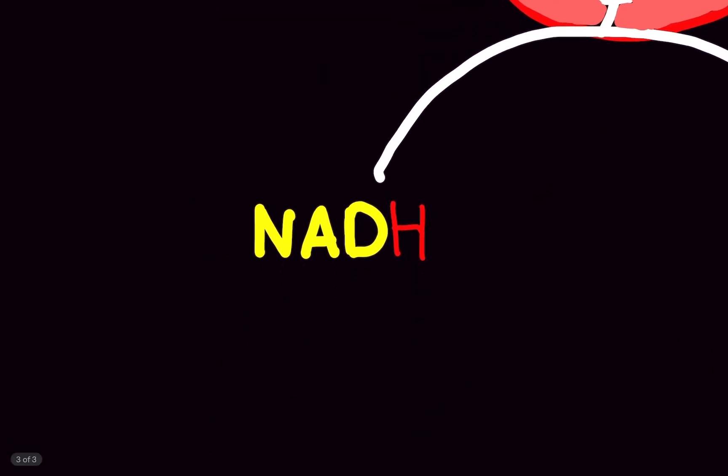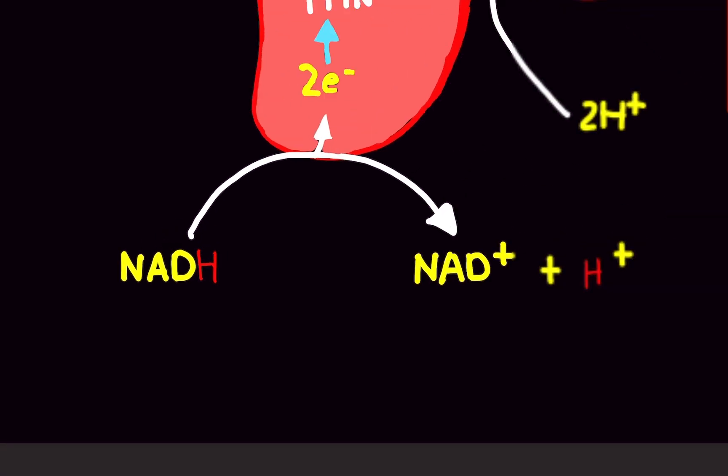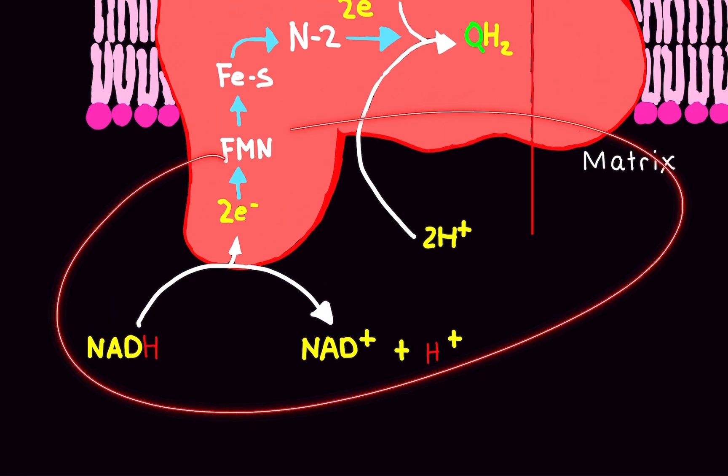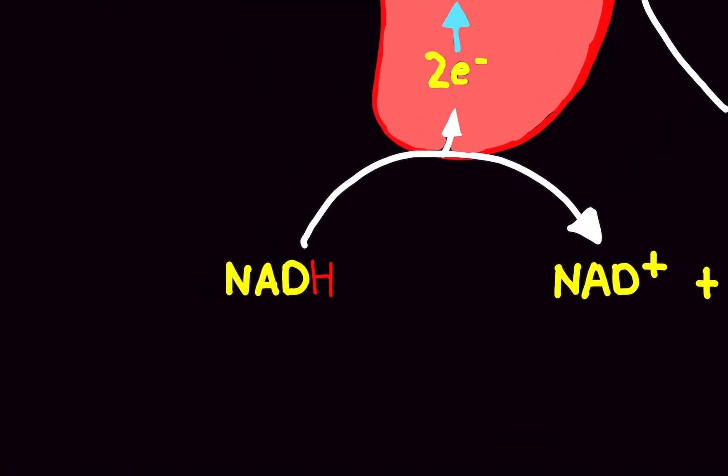We're going to start with NADH. Now notice, the first thing to notice is this is not NADH plus H. This is normal NADH. This is coming from glycolysis and the Krebs cycle. Now remember, glycolysis happens in the cytosol. We need to use the malate aspartate shuttle to get the NADH into the mitochondrial matrix, which is where all this is taking place. Now since the Krebs cycle happens in the mitochondrial matrix, we're already here, so we don't have to do any transportation. It's just sitting here ready to be used.